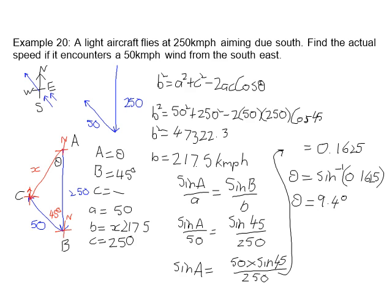Now there are two ways you can write this answer. You could say that the aircraft is flying 217.5 kilometers per hour, 9.4 degrees west of south.